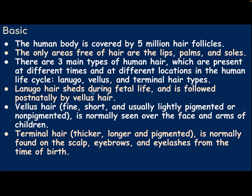Lanugo hair sheds during fetal life and is followed postnatally by vellus hair. Vellus hair is fine, short, and usually lightly pigmented or non-pigmented, and is normally seen over the face and arms of children. Terminal hair, thicker, longer, and pigmented, is normally found on the scalp, eyebrow, and eyelash from the time of birth.